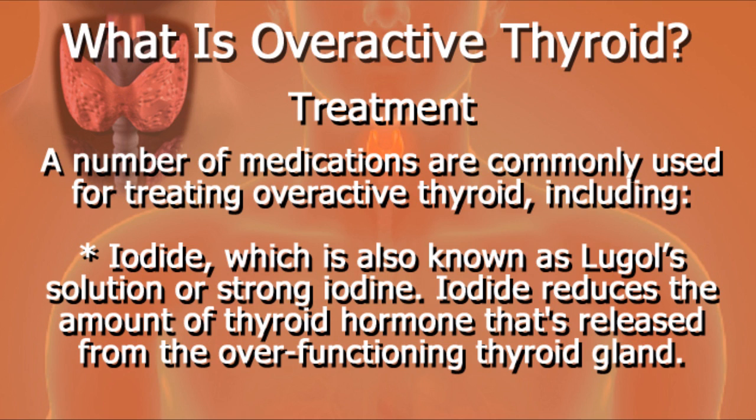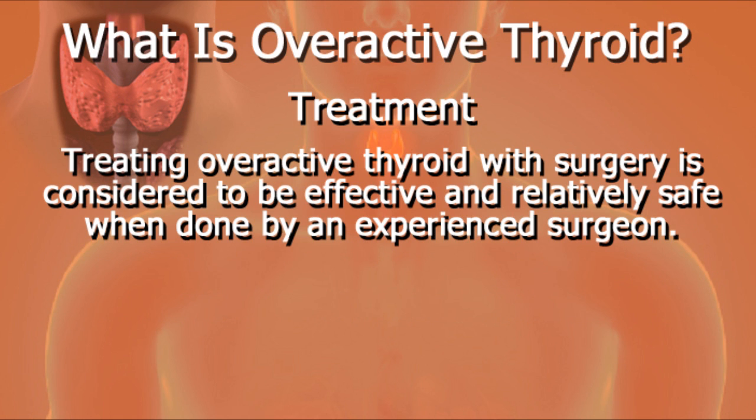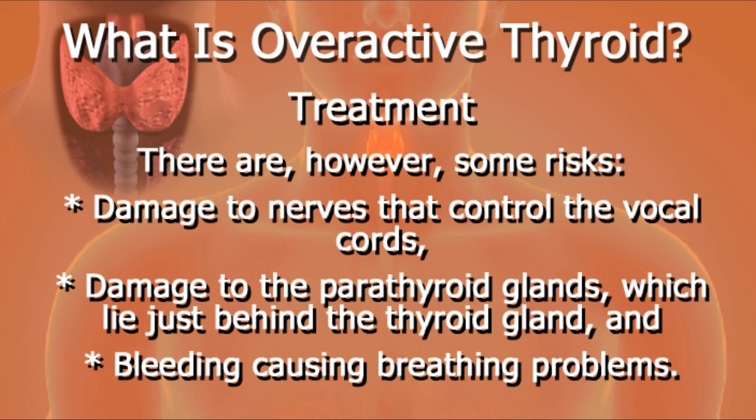Surgery is another option for treating overactive thyroid. It involves removing much of the thyroid tissue but leaving enough in place to continue thyroid hormone production. Treating overactive thyroid with surgery is considered to be effective and relatively safe when done by an experienced surgeon. There are, however, some risks, including damage to nerves that control the vocal cords, damage to the parathyroid glands which lie just behind the thyroid gland, and bleeding causing breathing problems.